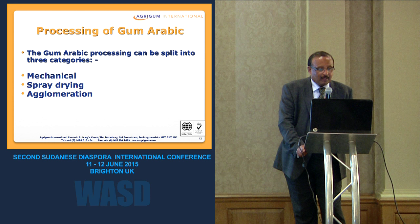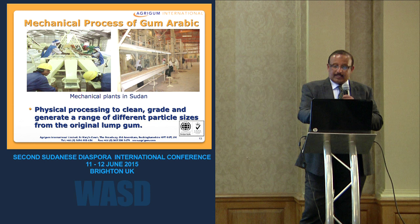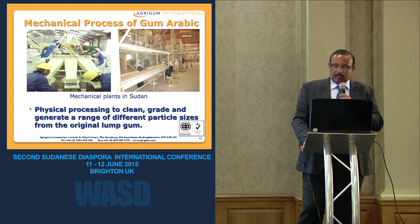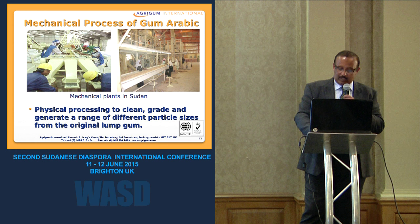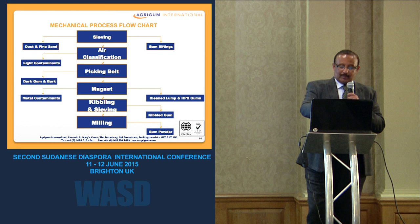The gum is processed by three major processes: mechanical, spray-drying, and agglomeration, and all three can be integrated in one plant. The mechanical plant, which is still common in Sudan, uses a simple setup with vibrating sieves and a hammer mill, along with a sorting belt where workers remove impurities. This flow chart shows how the gum is cleaned and processed mechanically.